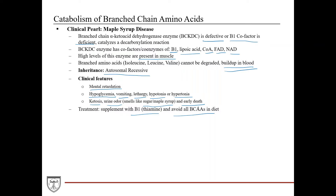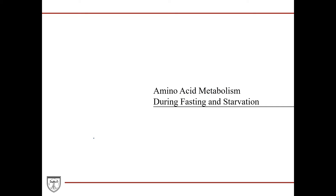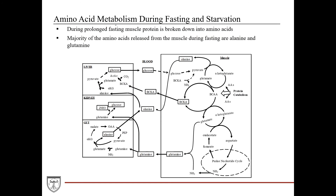Now we're going to discuss amino acid metabolism during fasting and starvation. During prolonged fasting, muscle protein is broken down into amino acids. Looking at this diagram of muscle tissue, the majority of the amino acids released from muscle during fasting are alanine and glutamine. We've talked about alanine's role in gluconeogenesis during the gluconeogenesis lecture, and we'll revisit it here.